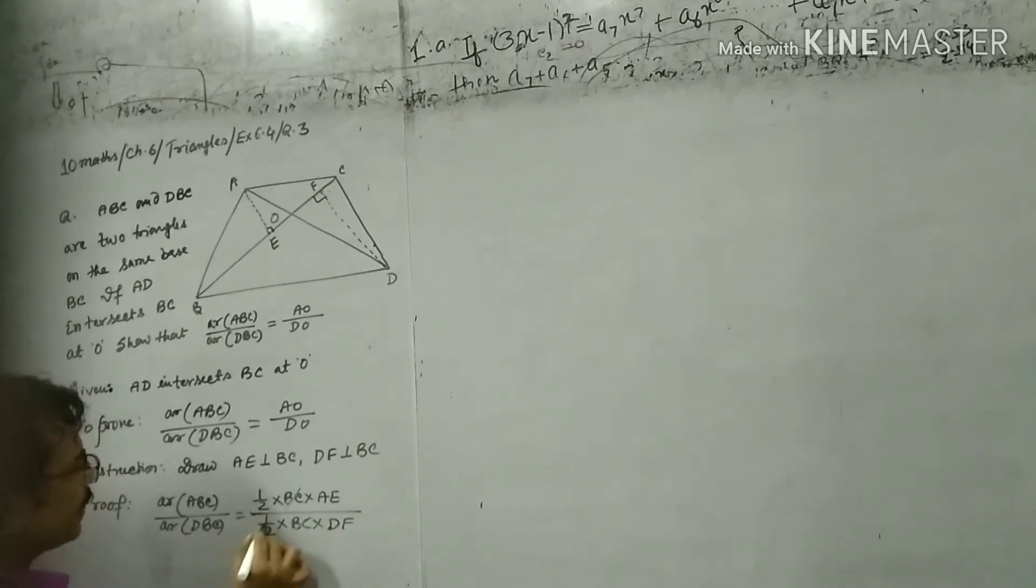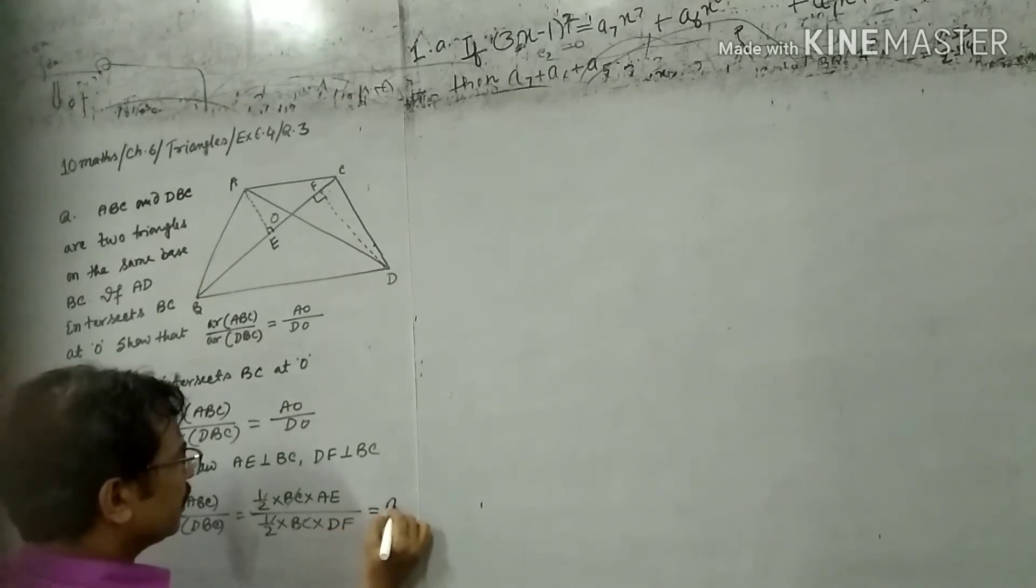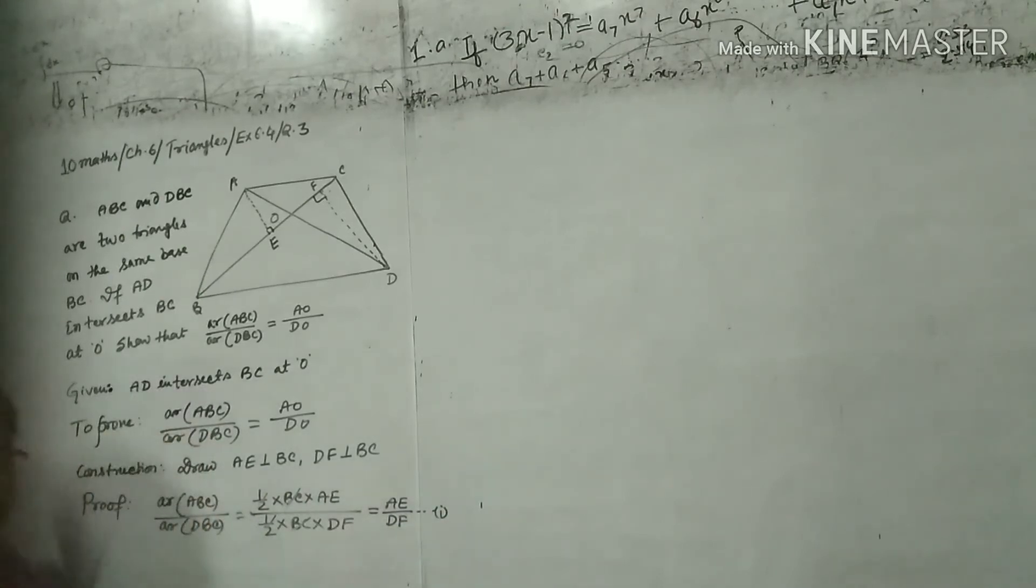BC cancels, half cancels. Equals to AE upon DF. That is equation number 1.